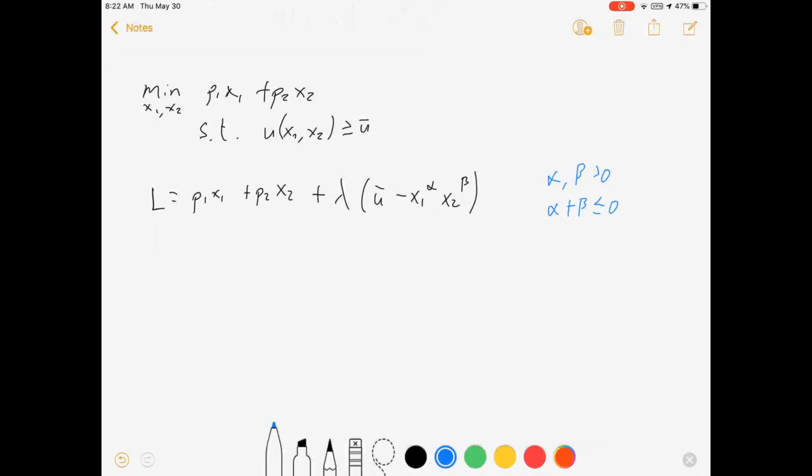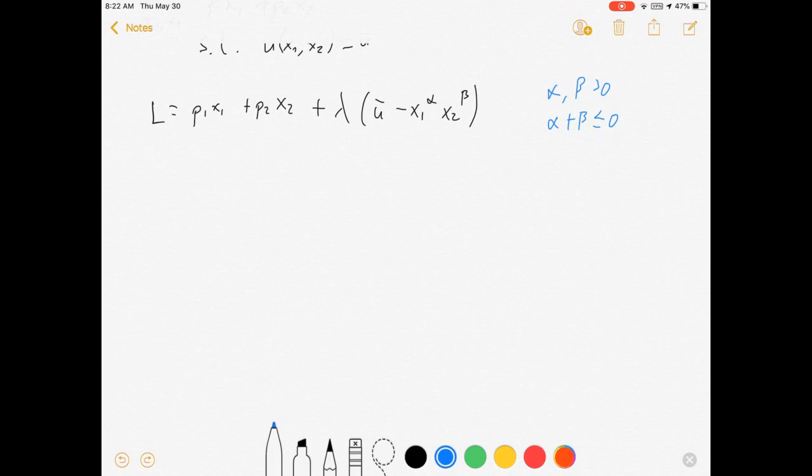And alpha plus beta is less than or equal to 0. Now this assumption is going to ensure that we have an interior solution, which means that we don't have to look for corner solutions, that constraint is binding. It just simplifies things. If I didn't have these assumptions, I might have to look for Kuhn-Tucker conditions to check for corner solutions. For this video, let's not bother with that.